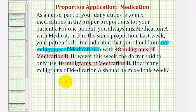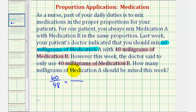To set up our proportion, we'll set up two ratios comparing the amount of medication A to the amount of medication B. Notice that last week, the ratio was 60 milligrams to 48 milligrams for the ratio of medication A to medication B, so we'll have the ratio of 60 to 48. The second ratio must be in the same order. Since this week we're told to use 40 milligrams of medication B, 40 must be in the denominator, and the numerator — the amount of medication A — is the unknown, which we'll call A.